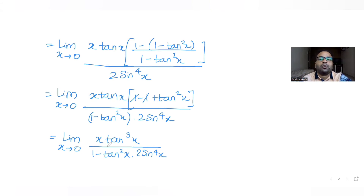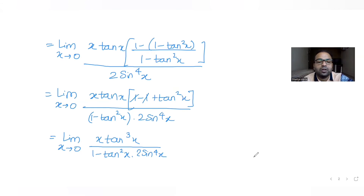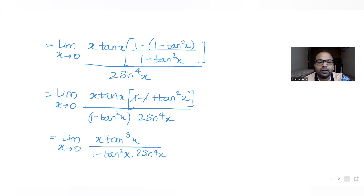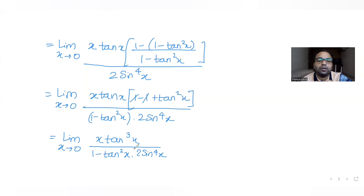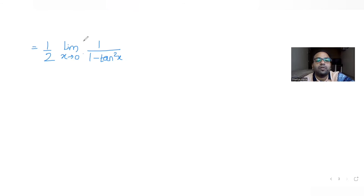Now I can separate the terms and apply limits separately to each of them. I take out the factor of 1/2 as common. Applying limit x tends to 0, the first factor I can handle is 1/(1 minus tan²(x)), because if I put x equal to 0, I simply get 1/(1 minus 0), which causes no problem.